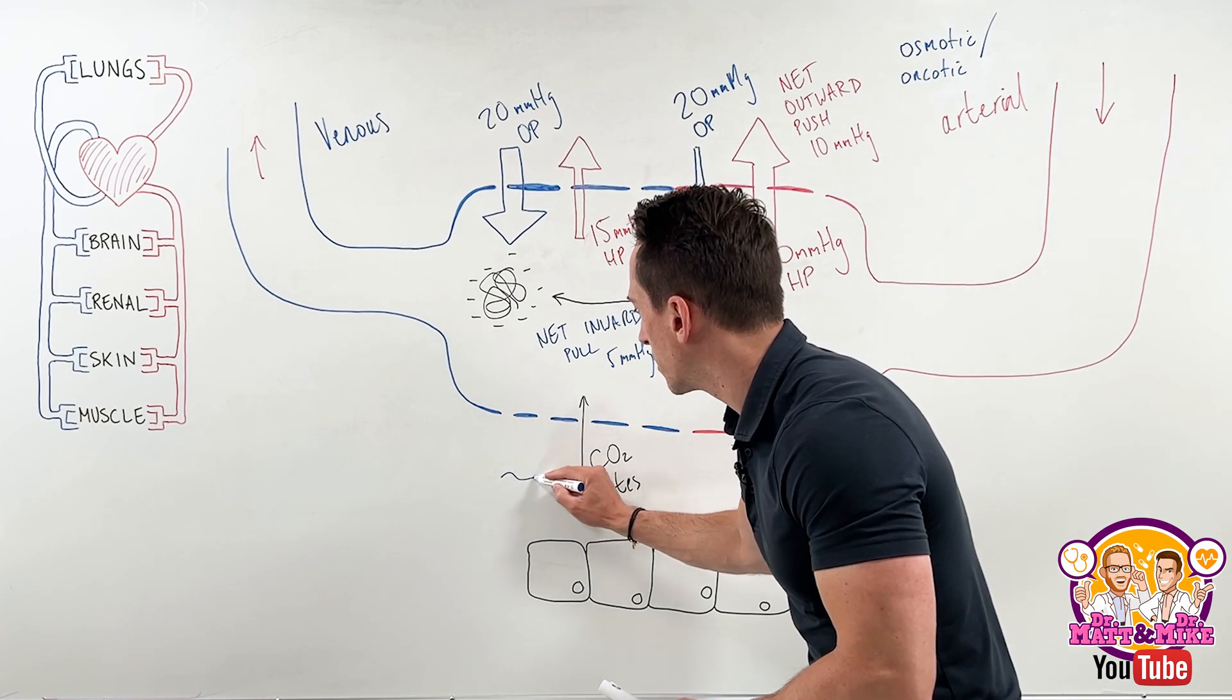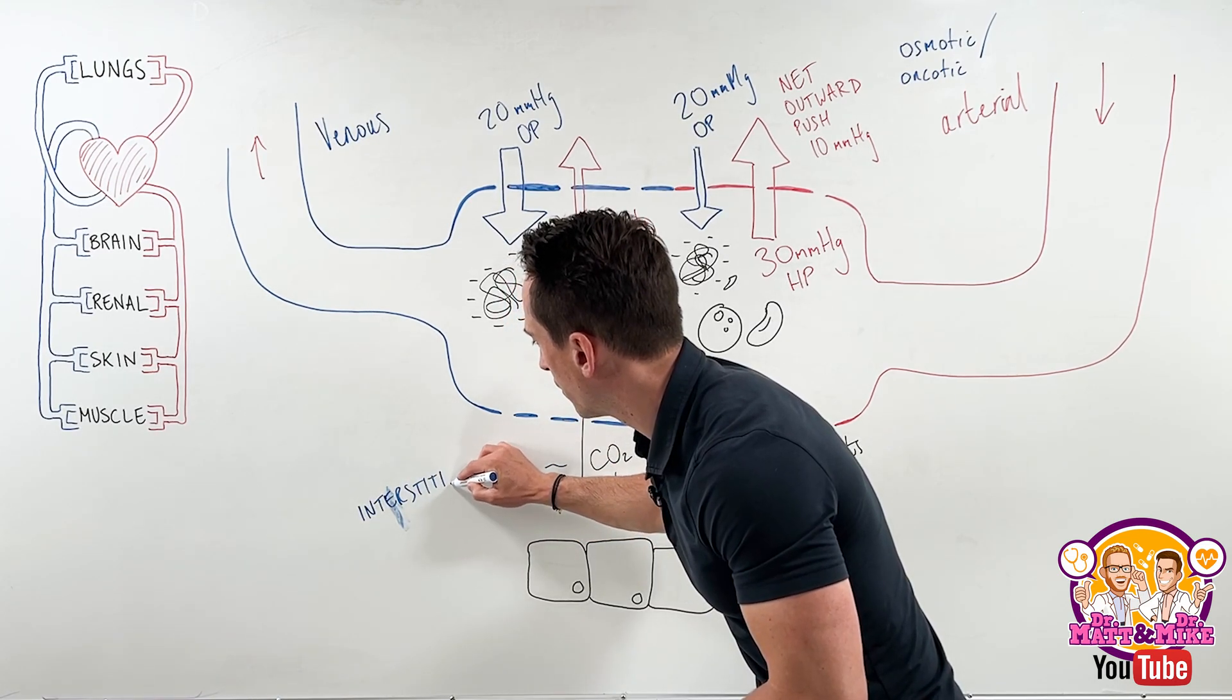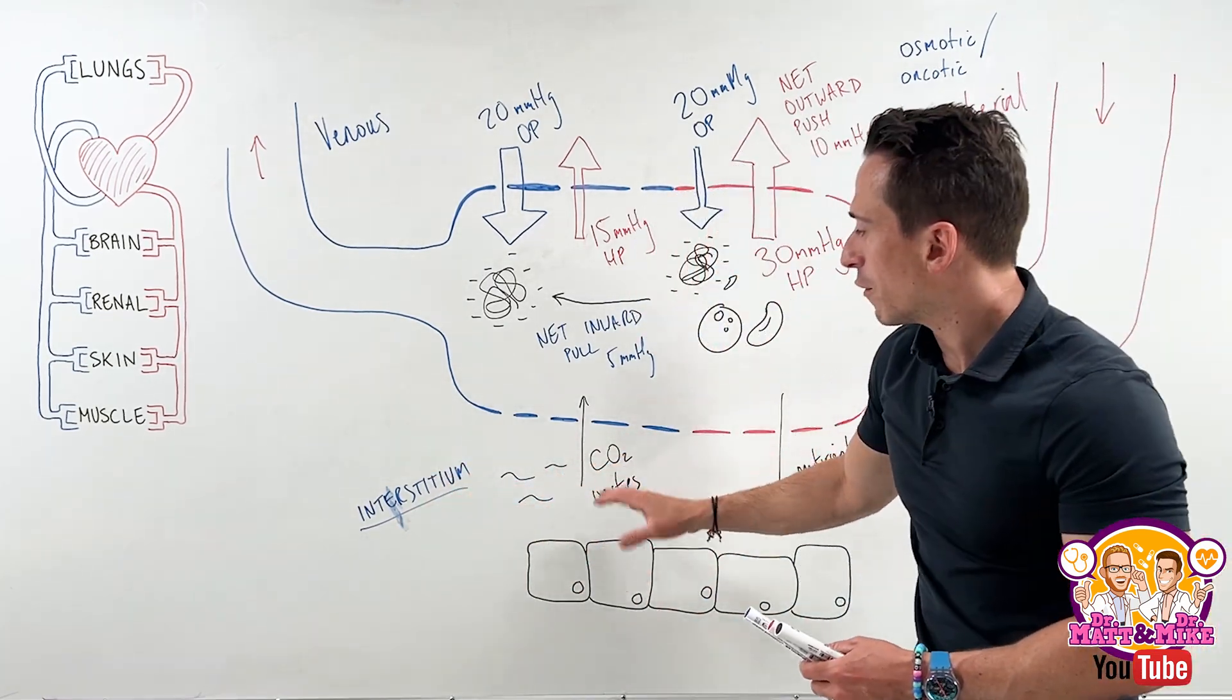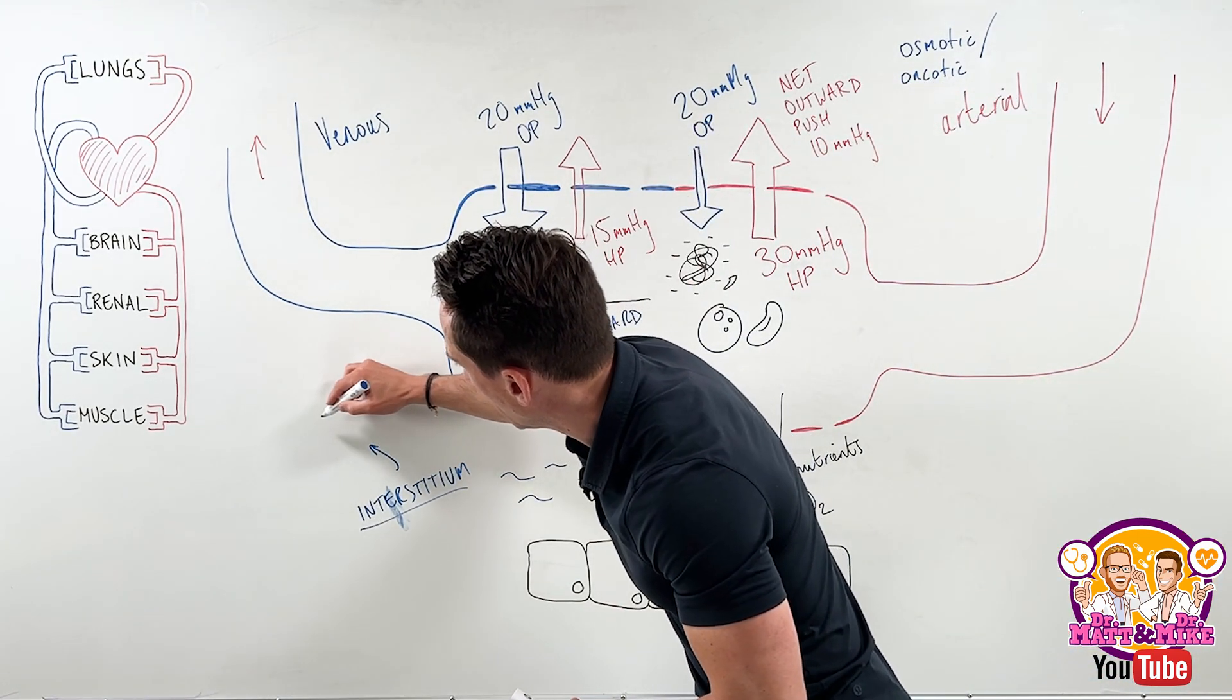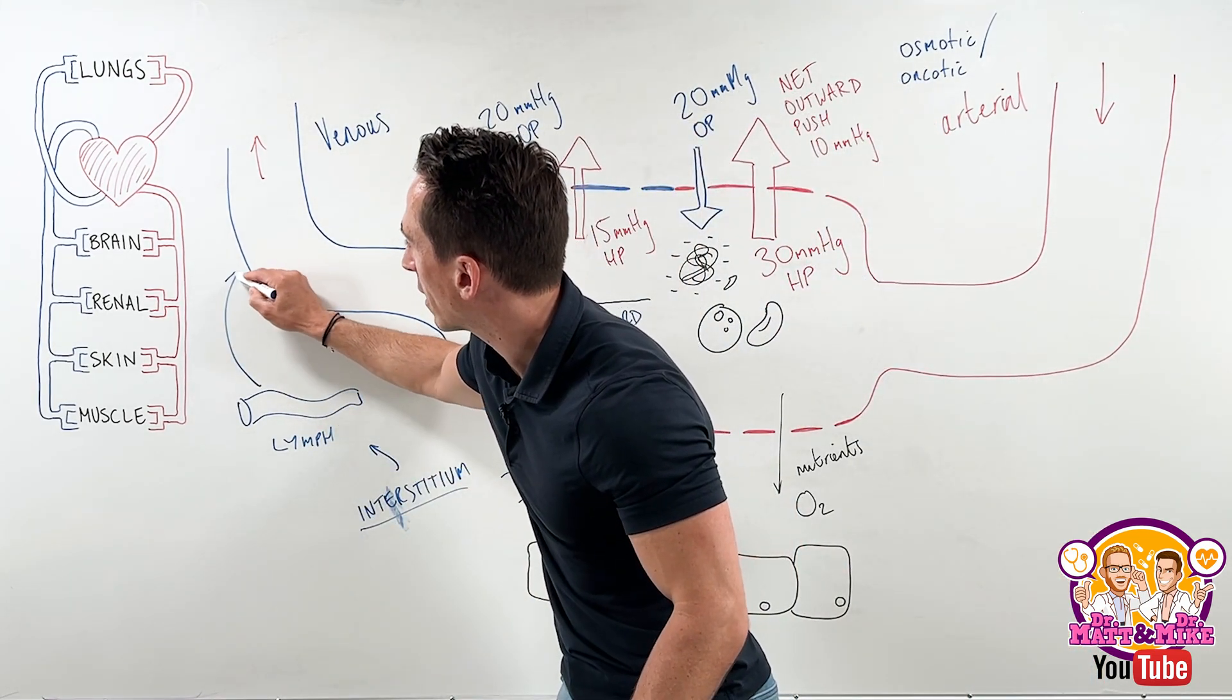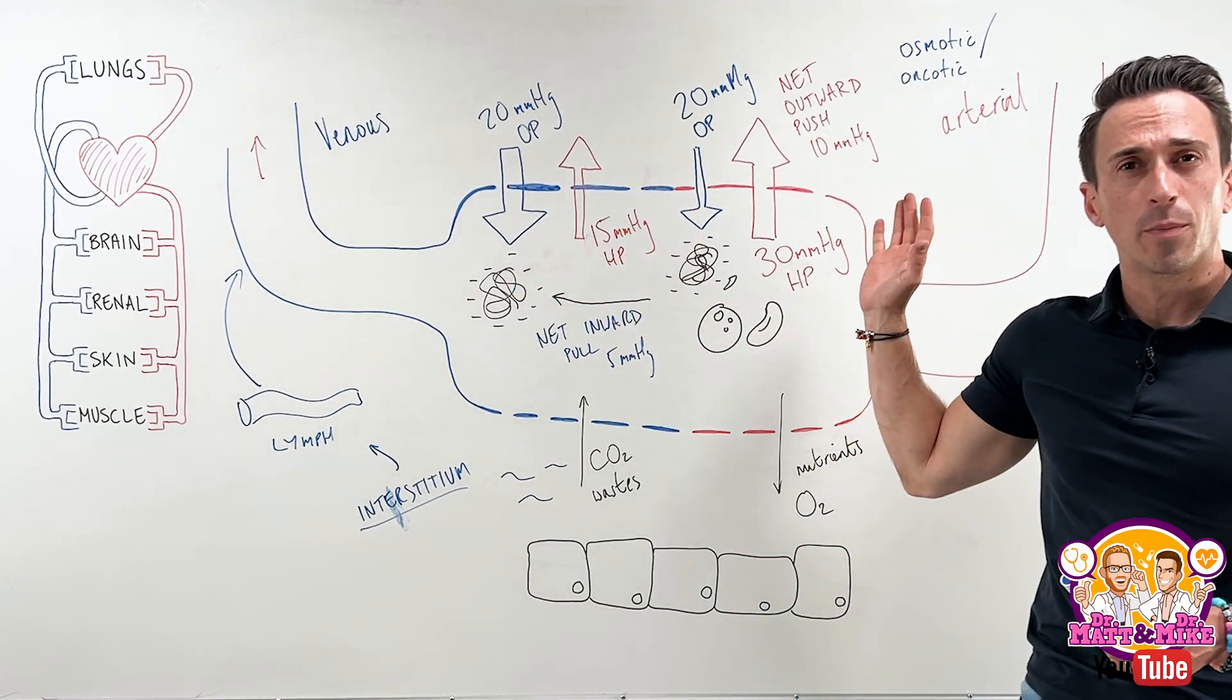Not all the fluid gets pulled back in. Some fluid will remain out in what we call the interstitium. This is the space outside of the blood, outside of the cells, but between the blood and the cells. This is the interstitium. So fluid remains in the interstitium. Where does it go? It gets thrown into the lymphatic system, the lymphatic system. But luckily for us, the lymphatic system connects back with the venous system, and any of that fluid that wasn't reclaimed gets put back into the venous system. Brilliant. This is the basics of capillary exchange.